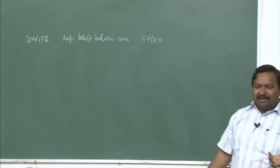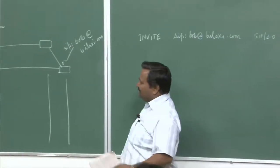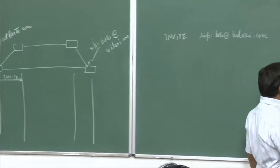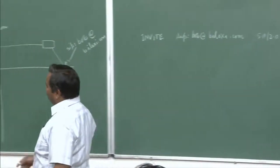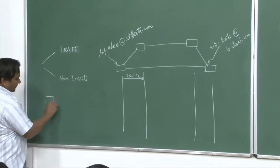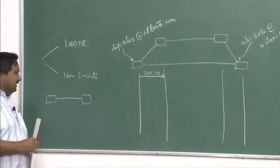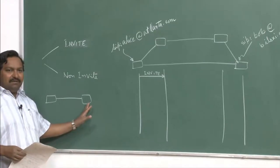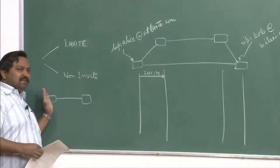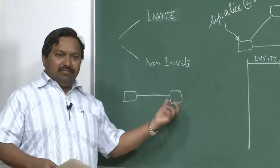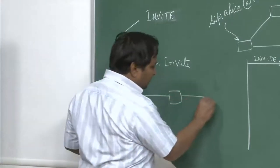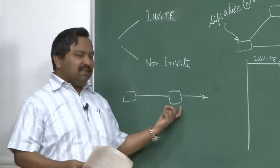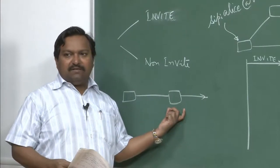This is usually implemented as a back-to-back user agent client, known as B2BUA. Proxies are of two kinds: stateless and stateful. In a stateful proxy, the user agent client maintains all the state, and the proxy keeps a complete track of the transaction happening, maintaining the whole state and doing the communication on its behalf. This is maintaining the state of the transaction — that is a stateful proxy.